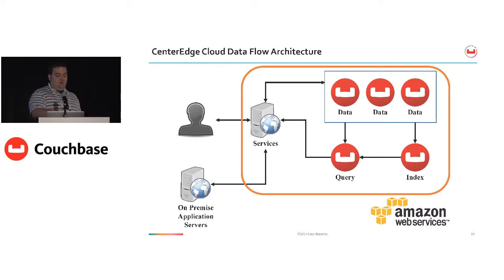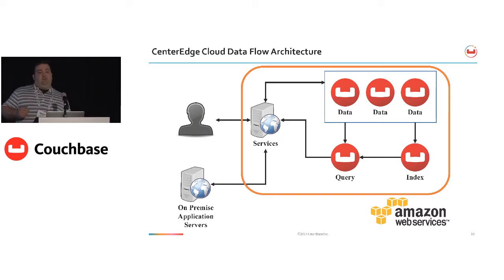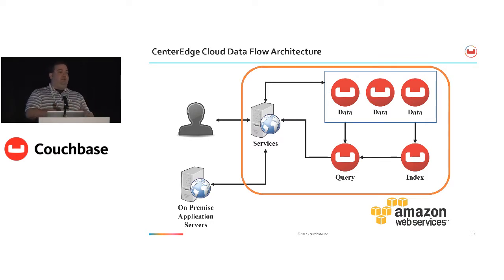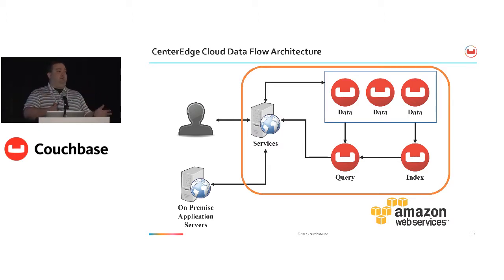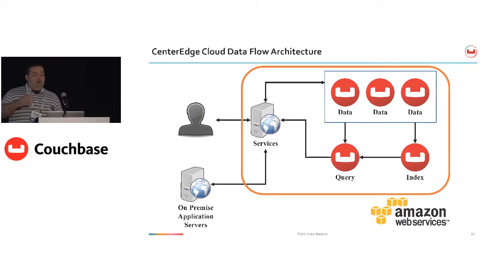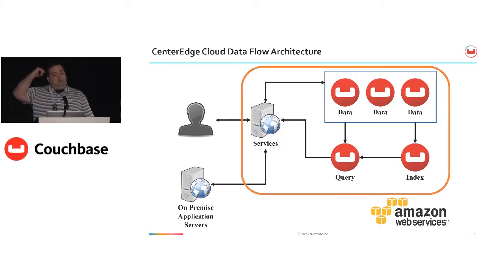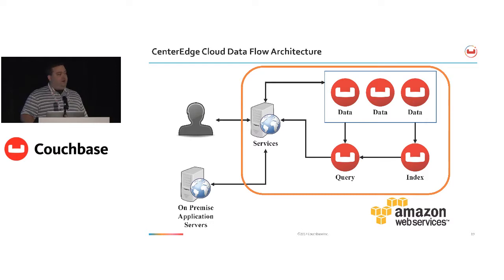One thing to note is that the only line going into our cluster is into the data nodes. It is possible to use upsert, insert, and delete queries running through the query node, more like traditional SQL. However, there's a performance hit. With traditional SQL, I've got to build a SQL string, send it to the server, the server parses it, develops a query plan, and then makes the change. It makes a lot more sense for speed and performance to write directly if I already know the primary key — just serialize the JSON and dump it in. For most cases, we try to write straight to the data nodes.